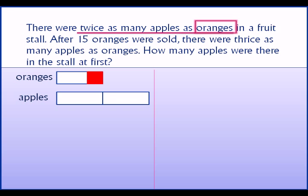Now 15 oranges were sold. The red portion indicates the oranges that were sold, which is equal to 15 in number. We map out the equivalent area in apples, which will be equal to 15 apples. There are two units in apples, so if this is equal to 15 then the other 15 should also be mapped out. So these areas we know are 15 and 15.